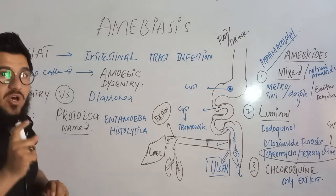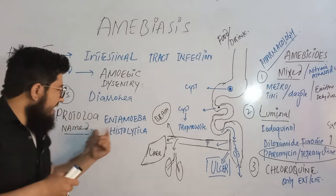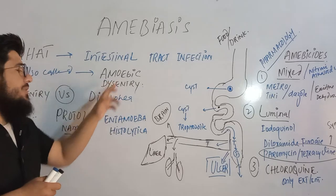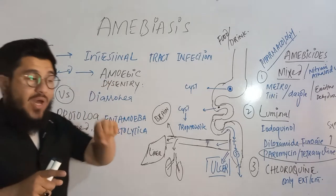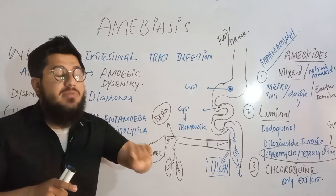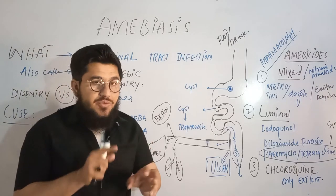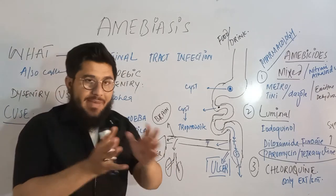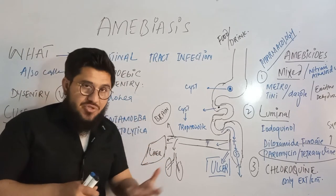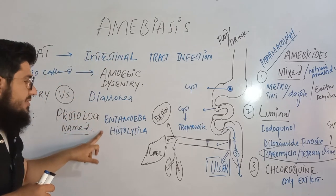Now, what is the main cause of MEBS? We have a protozoan named Entamoeba histolytica, which is a very prominent cause of amoebic dysentery. Remember, there are also some bacteria responsible for causing dysentery — that is bacterial dysentery, not amoebic dysentery. Both protozoa and bacteria are responsible for causing dysentery, but here we are specifically discussing protozoal dysentery, named amoebiasis, caused by Entamoeba histolytica.